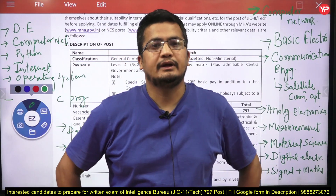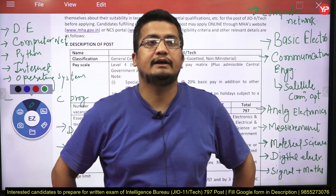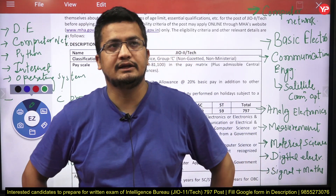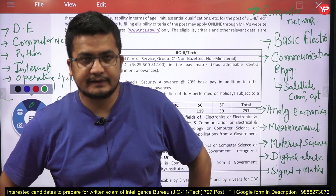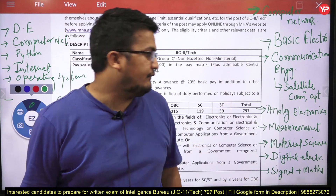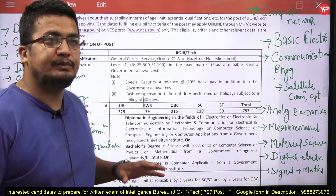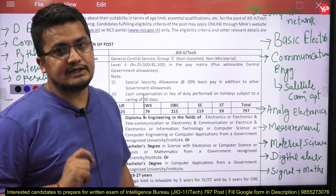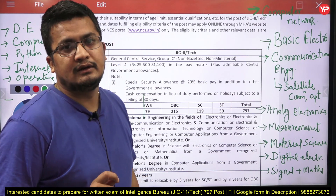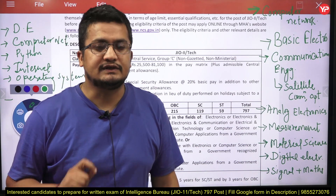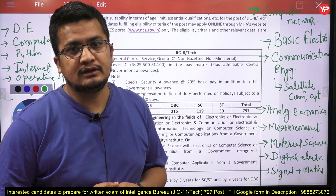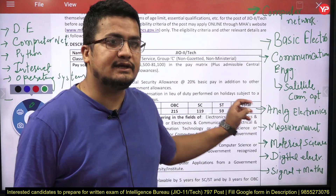Hello everyone, welcome to Yardpedia Education. This update is related to the JIO Junior Intelligence Officer advertisement from the Intelligence Bureau. They have released an advertisement for 797 vacancies, which is a very huge number from the job market point of view in India. If you have done your diploma or degree, then this number is very significant for you.